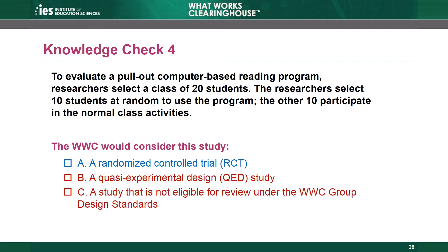Choices B and C are incorrect. The study is not a QED because it used a random process to create the groups, and this is an RCT, so it is eligible for review. Note that the initial selection of the 20 students to participate in random assignment has no bearing on the eligibility of this study as an RCT. It does not matter how the researchers identify the population of students subject to randomization.